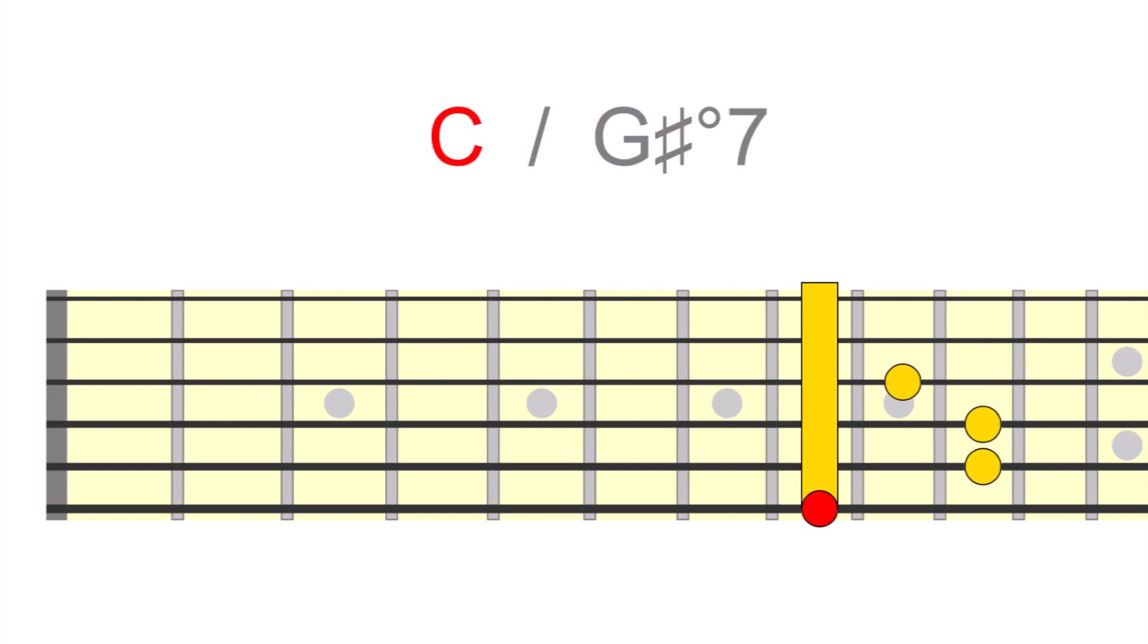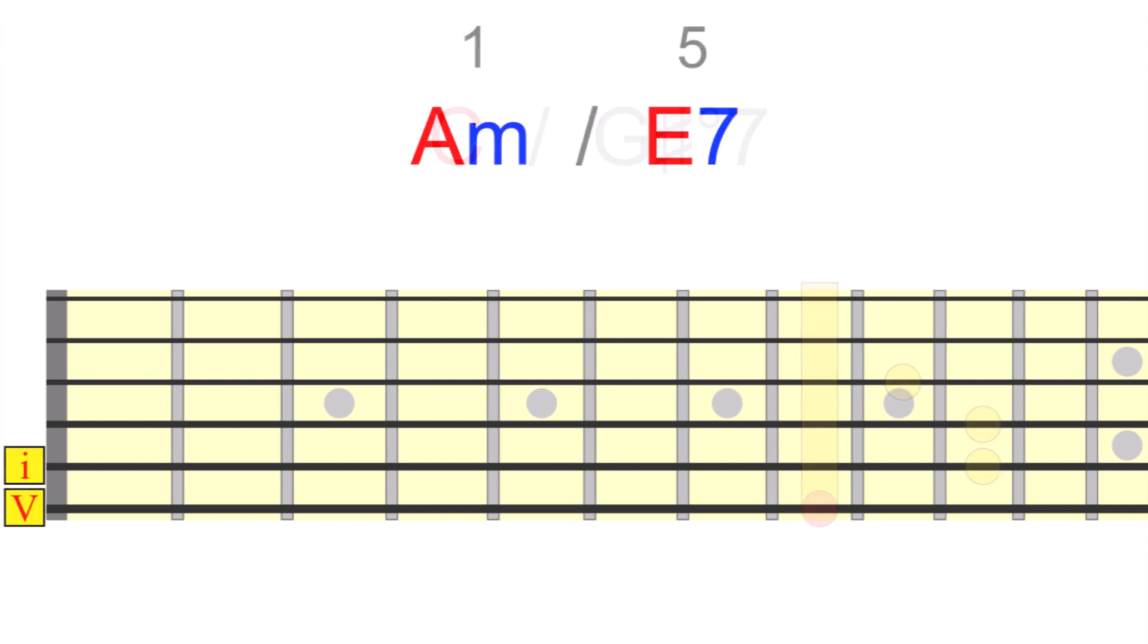In minor keys, the diminished 7th chord is used in a similar way, typically to create more tension over the V chord. In the key of A minor for example, E7 would be our dominant chord, based on the harmonic minor scale. Now hear what happens when we play a relative diminished 7th chord, B diminished 7 in this case, over the E.